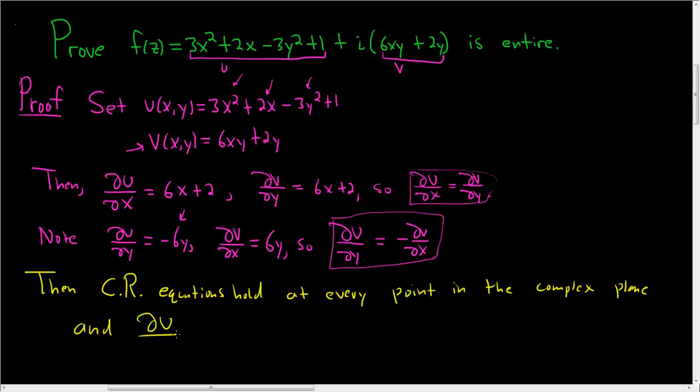So to finish, we just have to say some stuff. So then the Cauchy-Riemann equations hold at every point in the complex plane, and ∂u/∂x, ∂u/∂y, ∂v/∂y, and ∂v/∂x exist, or rather are continuous, they obviously exist, are continuous at every point in the complex plane.